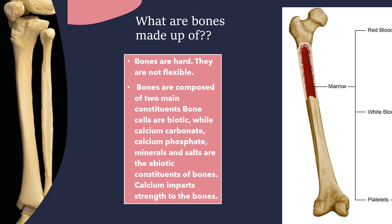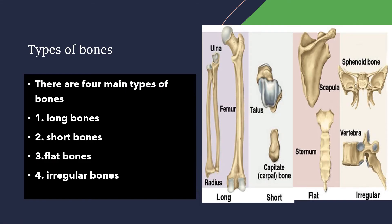Calcium gives strength to the bones. There are four main types of bones: first, long bones; second, short bones; third, flat bones; and fourth, irregular bones.